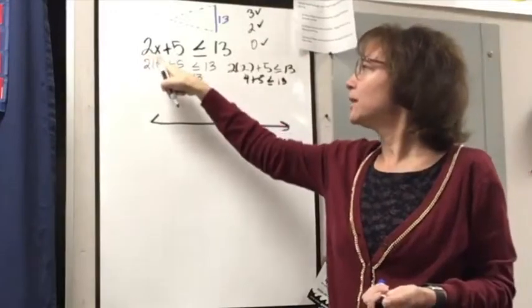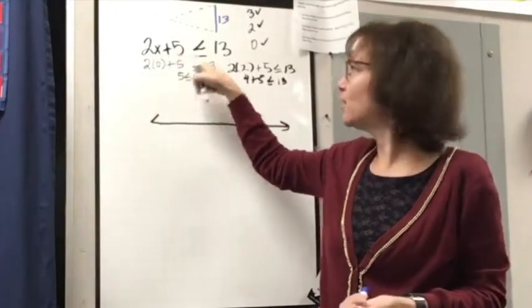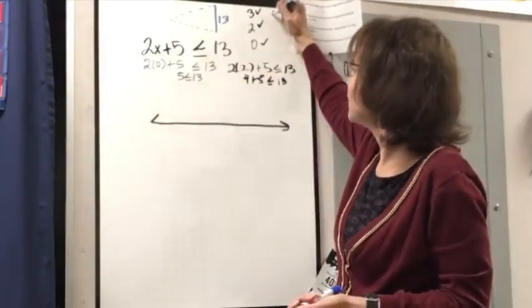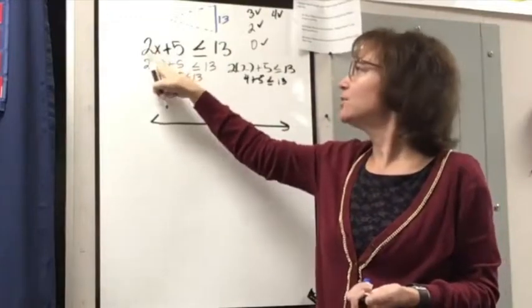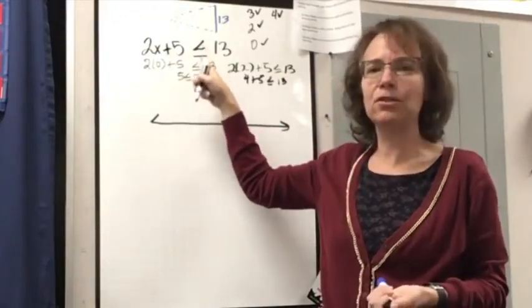What about 4? So 2 times 4 is 8. 8 plus 5 is going to be 13. Oh, that's equal to 13. So my 4 is going to work. Well, will 5 work here? So 2 times 5 is 10. Plus 5 is 15. That's going to be too great.